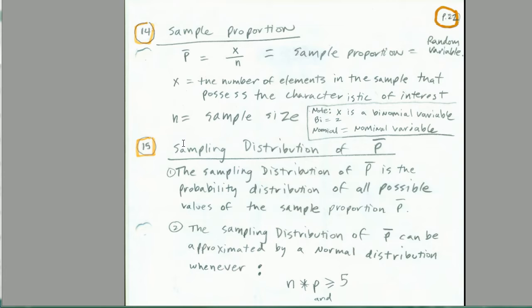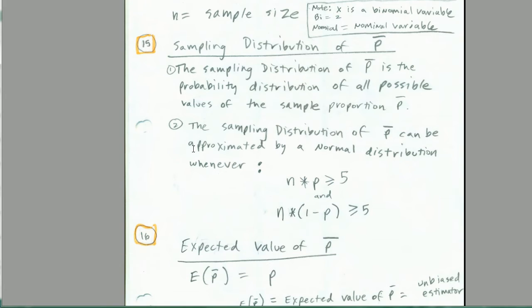The sampling distribution of p-bar — if we went through the same steps as last video, we would discover the same things: it's normally distributed, there's less variation, and p-bar equals exactly the population p. For the sampling distribution of p-bar to be approximated by the normal distribution, we have to take sample size times our proportion — that has to be greater than or equal to 5 — and sample size times 1 minus the proportion, which also has to be greater than or equal to 5.